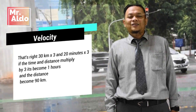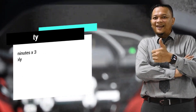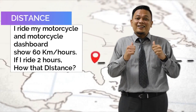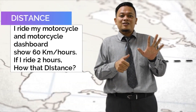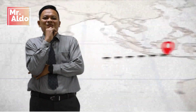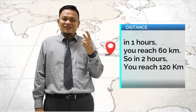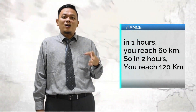So the velocity is 90 kilometers per hour. So easy, guys. In one hour you reach 60 kilometers. So in two hours, you just multiply by two — it's 120 kilometers.